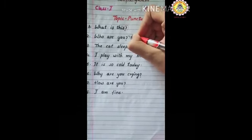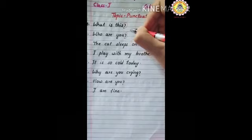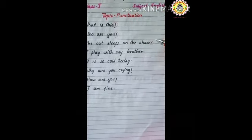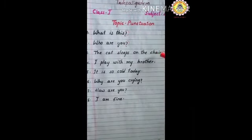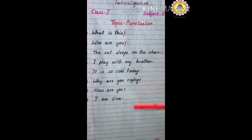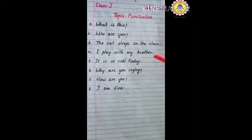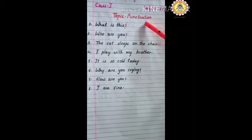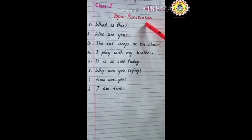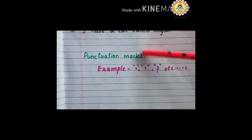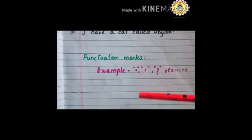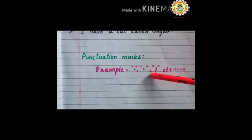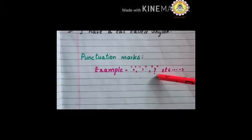Have you observed these marks in each sentence? These are called punctuations. We use specific kinds of marks while writing different sentences. They are called punctuation marks. First one: this is full stop. This is comma. And this is question mark.